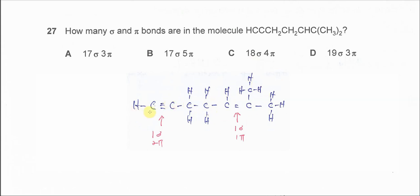So let's count the sigma bond first. Okay, so sigma bond is 1, 2, 3, 4, 5, 6, 7, 8, 9, 10, 11, 12, 13, 14, 15, 16, 17, 18, 19. So sigma bond is 19.